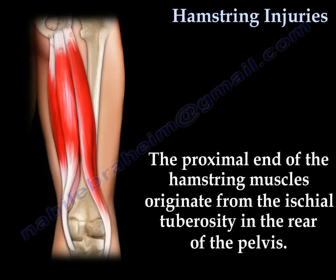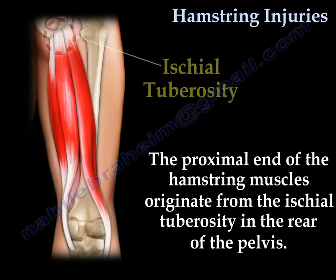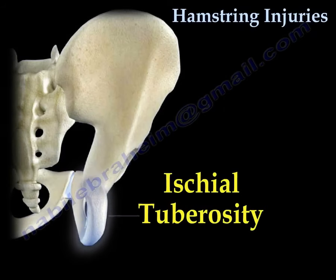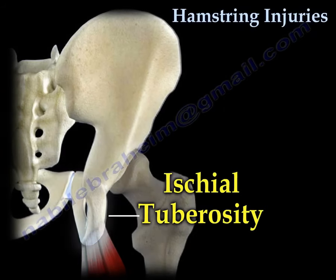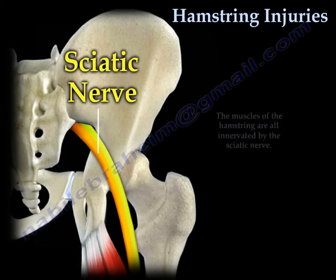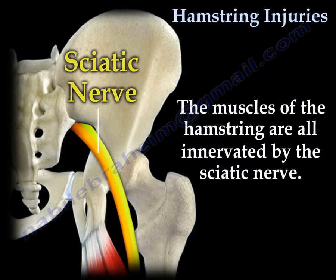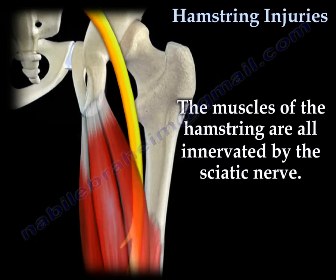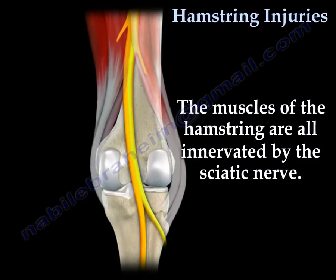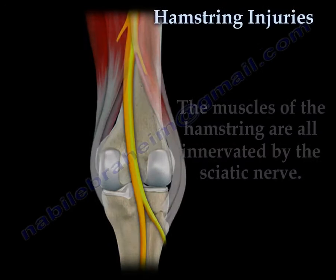The proximal end of the hamstring muscles originates from the ischial tuberosity of the pelvis. Here you can see the ischial tuberosity of the pelvis. The hamstrings come from the ischium and are close to the sciatic nerve, and they are innervated by the sciatic nerve.